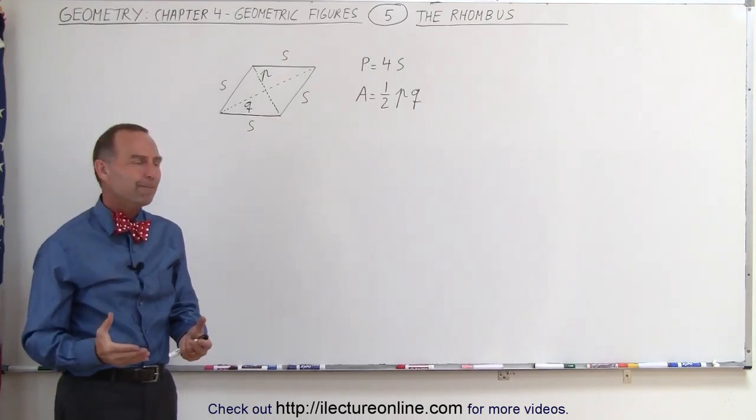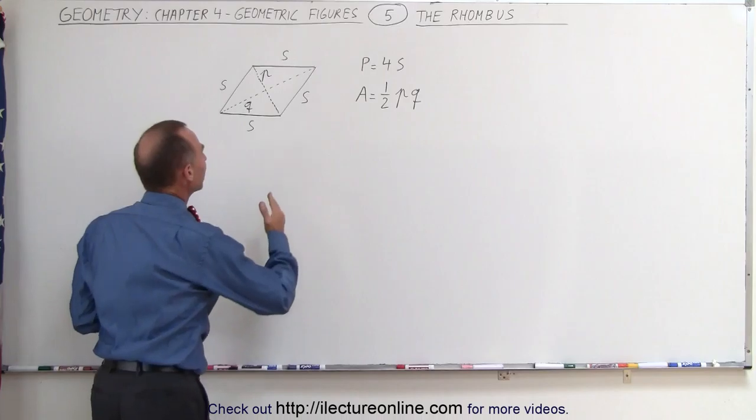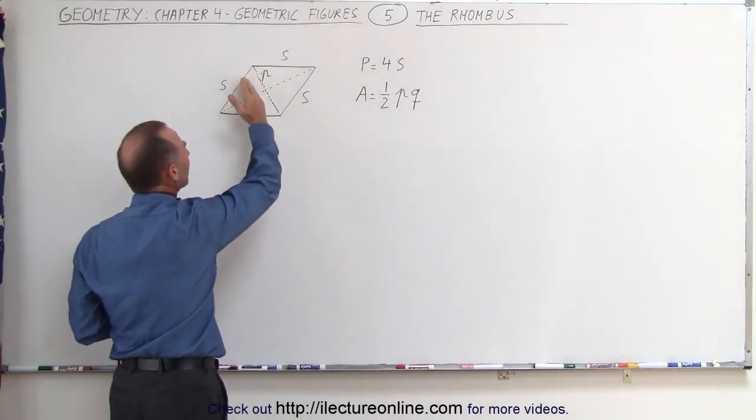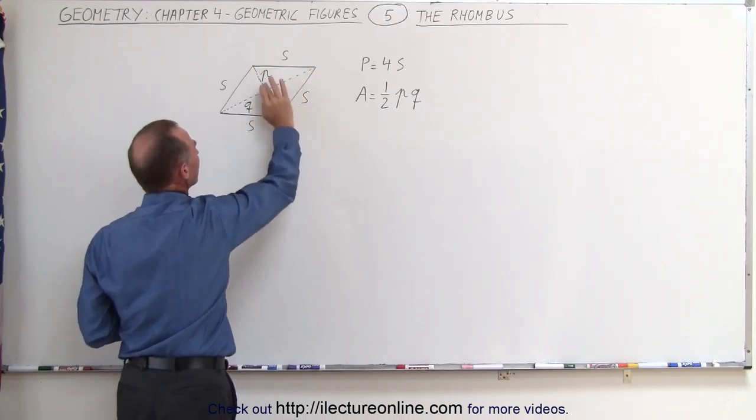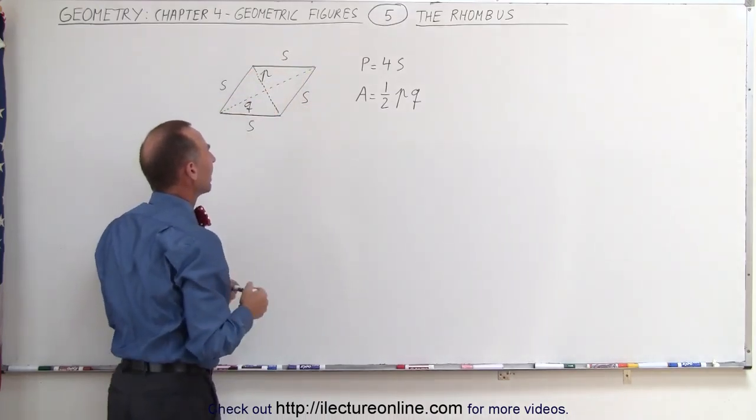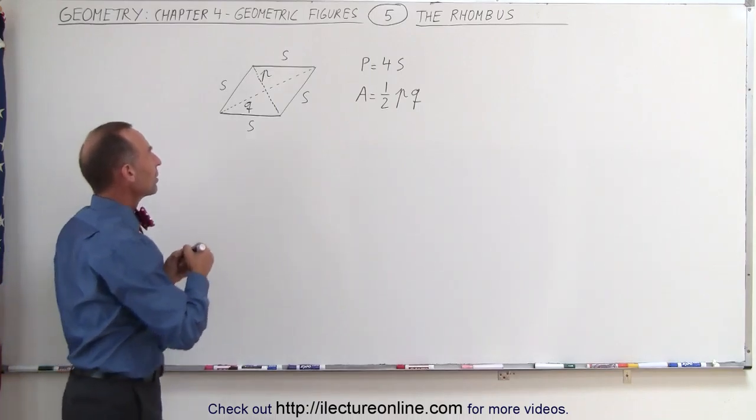Now where did that come from? Well, imagine that the diagonal P divides the rhombus into two equal triangles - this triangle right here and this triangle right here. And let's find the area of each of the two triangles.